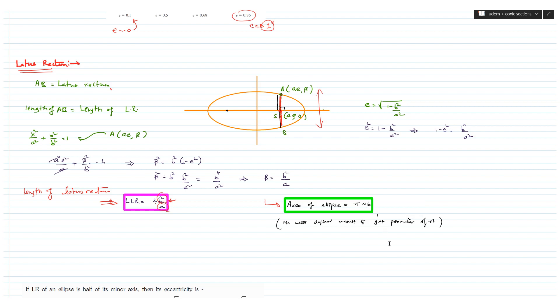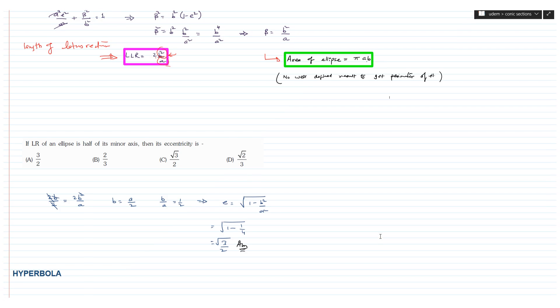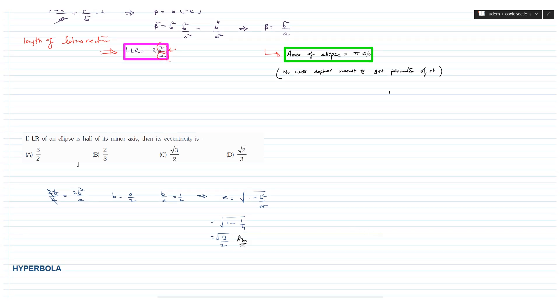One more important point: there is no direct rule to get the perimeter of the ellipse — it involves very complex relations to evaluate the perimeter. Let us quickly solve a problem on ellipse.